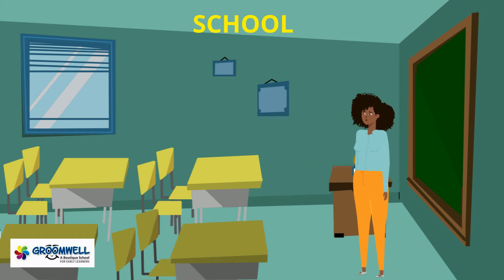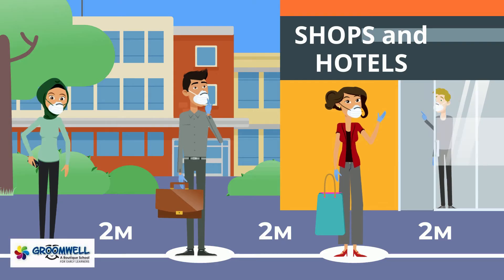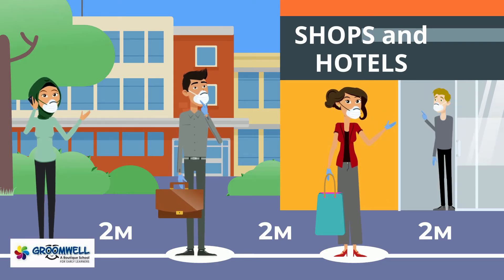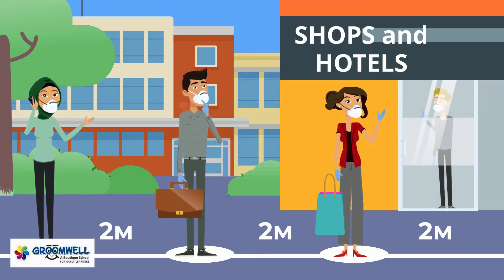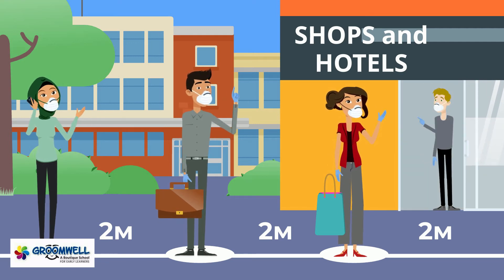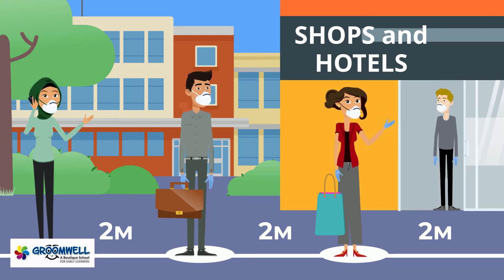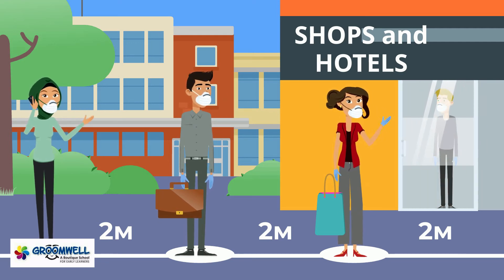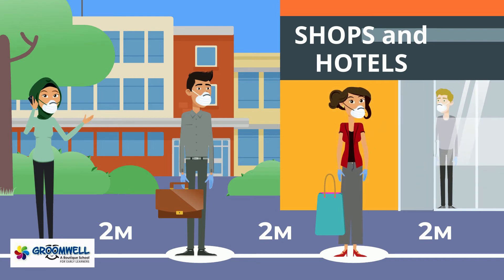In shops and hotels, computers are used in shops for making bills, keeping records of stock and selling of different items. In hotels, computers are used for recording names of people who check in, the meals they have, etc.